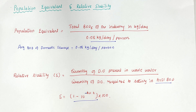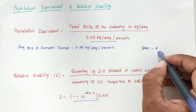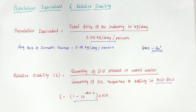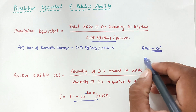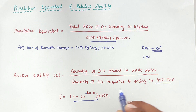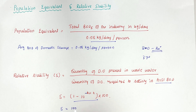In India, BOD tests are generally conducted at 37°C because maintaining equipment at 20°C is very costly. We can maintain 20°C in an incubator, but in India it is not cost-effective. So the formula at 20°C is: S = 100 × (1 − 0.794^t₂₀).